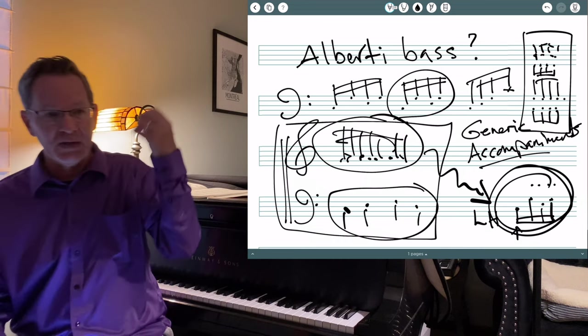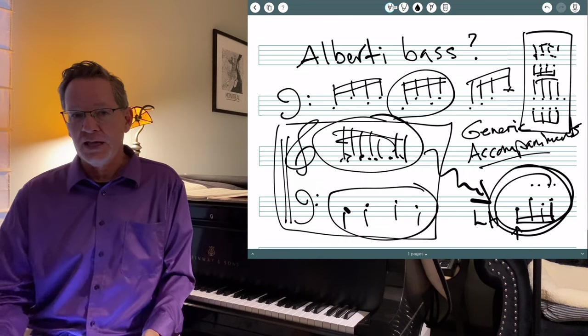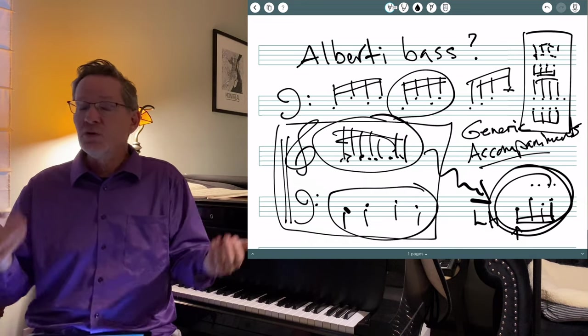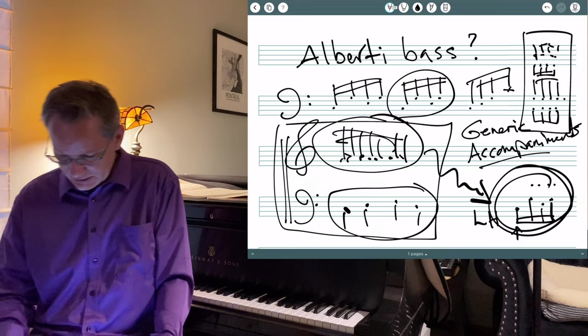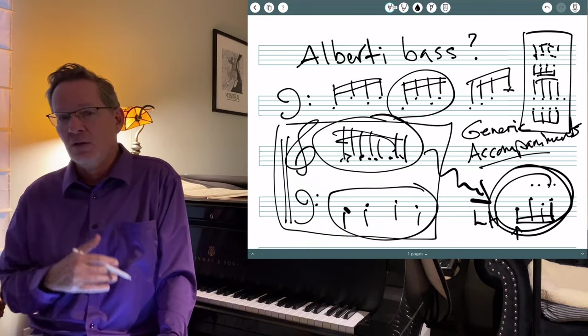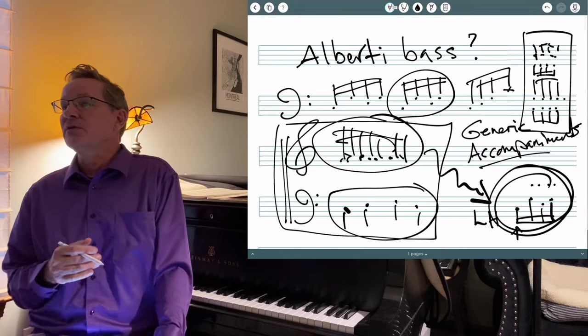Right? It's something where it keeps getting struck over again, as opposed to one long chord that just rings, which we would see in Brahms, for example. So it's compensating for the lack of sustain on those early keyboard instruments.